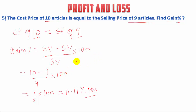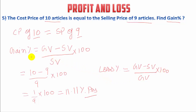Remember, in the previous question we found the loss percentage, and the loss percentage formula has the greater value in the denominator. Don't get confused about whether to use the greater value or smaller value in the denominator. Think of it this way: everybody wants loss to be less, and loss is less when the denominator has a greater value. Everybody wants gain to be more, and gain is more when the denominator has the smaller value.